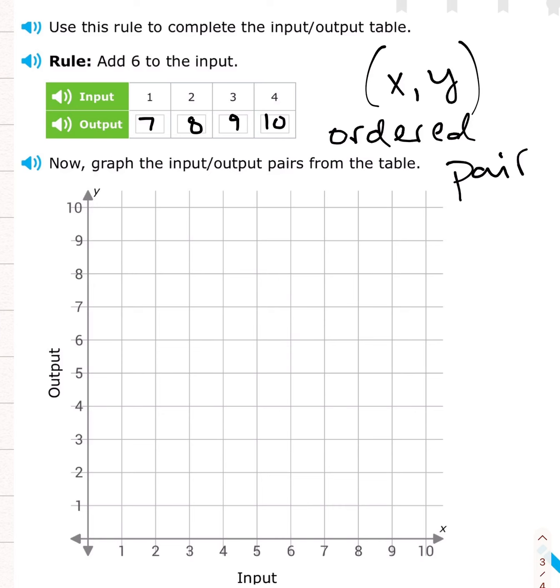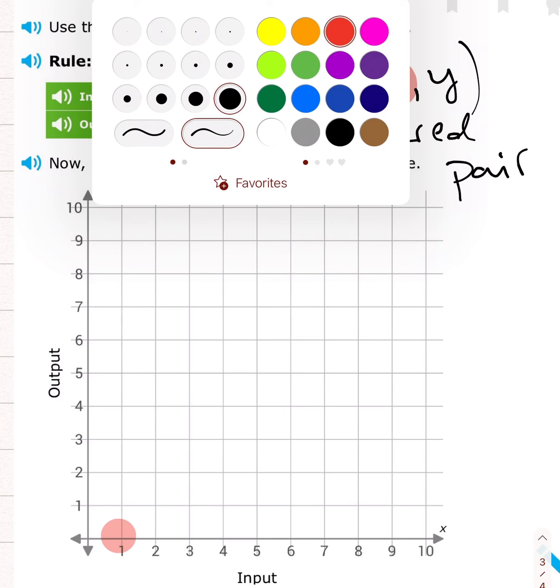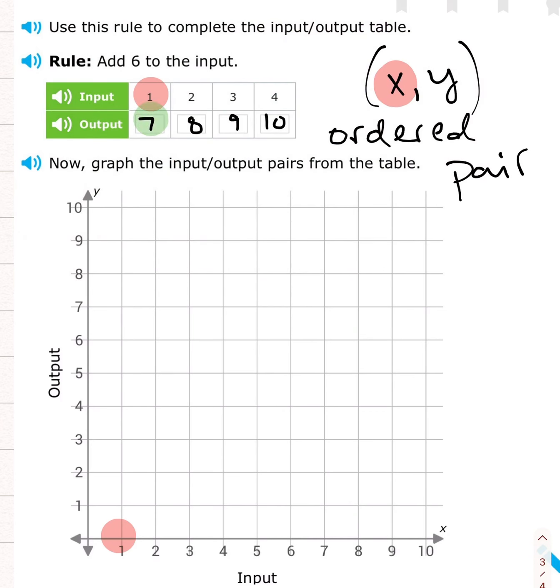So the input is going to be our first coordinate. The input tells us our x-axis. Okay. So the input is 1. So I'm going to go over to 1 on the x-axis. I'm going to start at 0, which is way over here. And I'm going to go over to 1. That's my first move. Okay. Now I'm going to look.